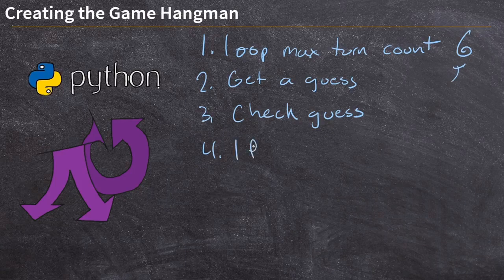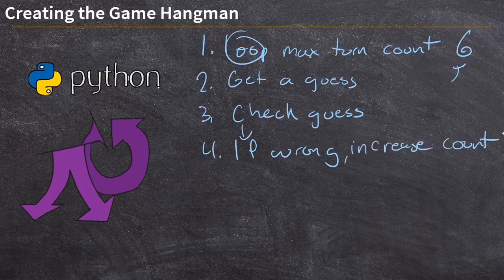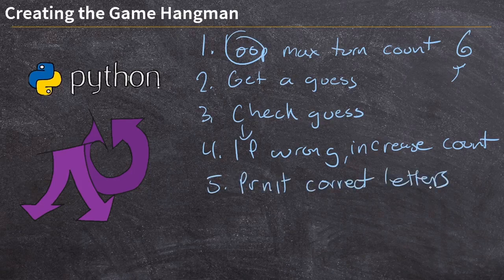If it's wrong we will increase the count — you can already see something happening here. We've already got a loop, now we've got an if statement. Then I think we'll finish by printing out the correctly guessed letters, so that the player can see how many letters they've gotten or what part of the word they've already gotten correct.